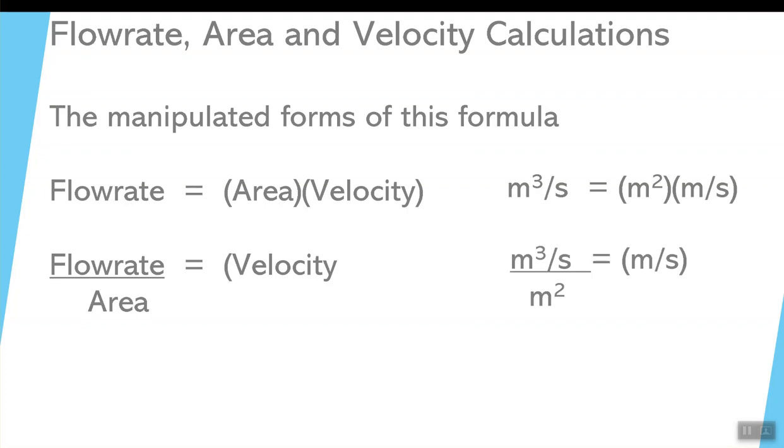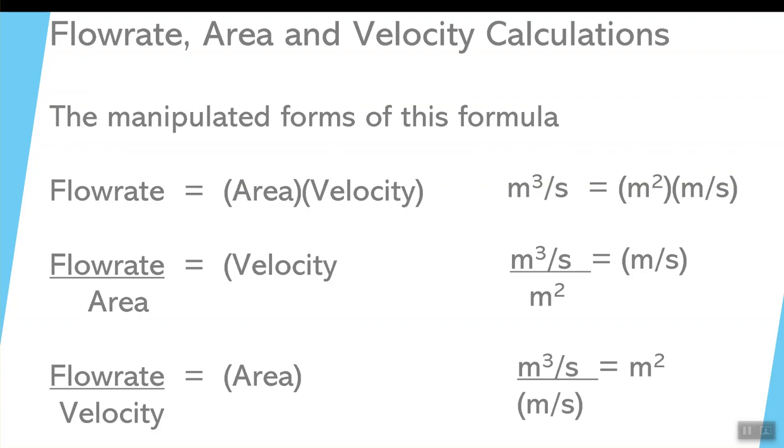And just to check for the units, notice meters cubed per second is on the top, divided by meters squared. Well, meters cubed divided by meters squared gives you meters per second. The right side of the units work out, so that confirms. So the next option for this formula is flow rate divided by velocity equals area. And looking at the units, meters cubed per second divided by meters per second. Notice how the per seconds cancel out. And meters cubed divided by meters equals meters squared.